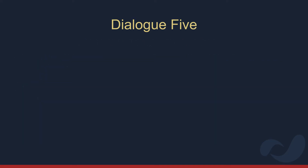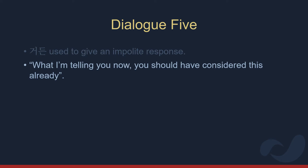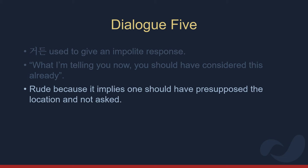Here the speaker gives an impolite response with 거든. Note that the sentence wouldn't sound so rude and aggressive if it were simply 옆에 있어요. 거든 has the nuance of, you know what I'm telling you now? You should have known this already. It sounds very rude and disrespectful because it implies the other person should have presupposed the location of the syrup and that they shouldn't have asked such a question in the first place.